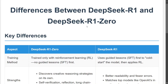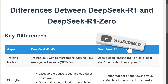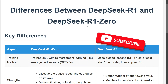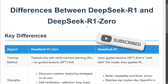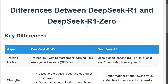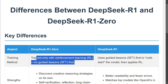DeepSeek has just released two models: DeepSeek R1 and DeepSeek R1-Zero. I have already covered how you can use the models for free and their key details. Now I'm coming to a very crucial problem — explaining the difference between the two models, DeepSeek R1 and DeepSeek R1-Zero. So let's get started.